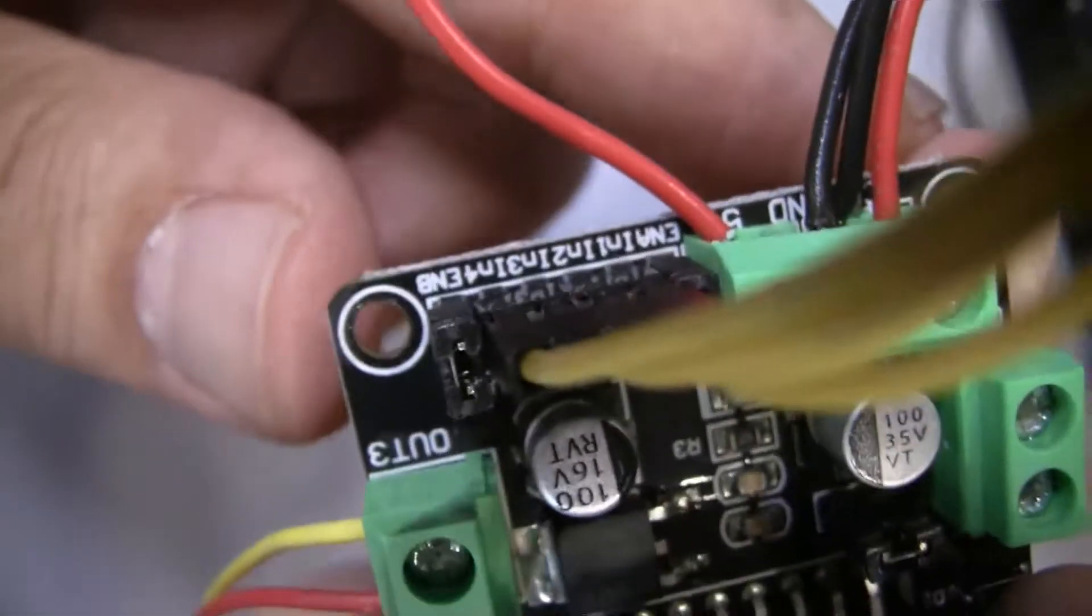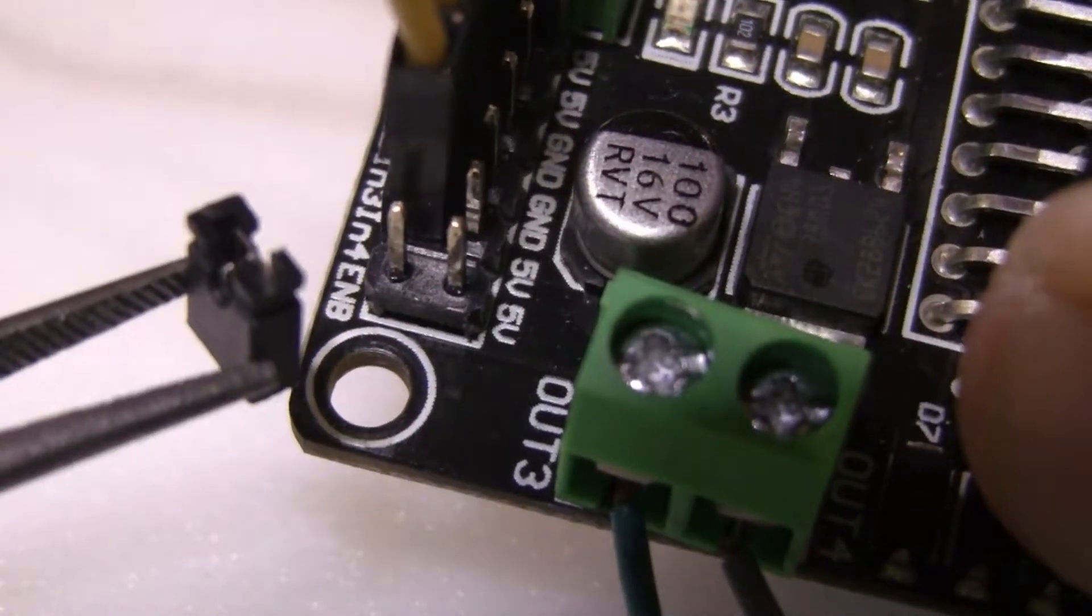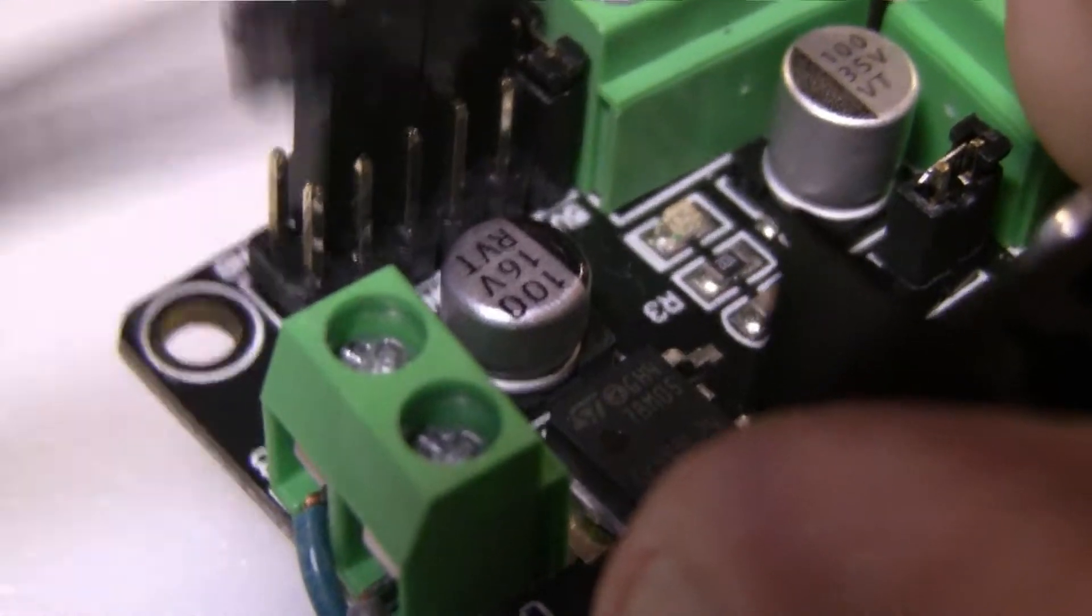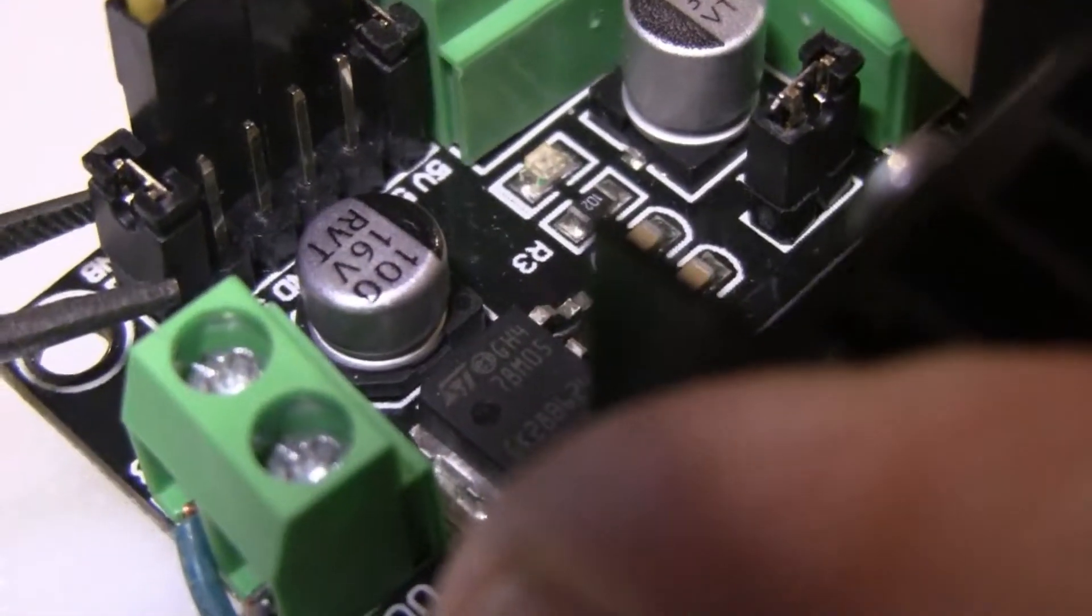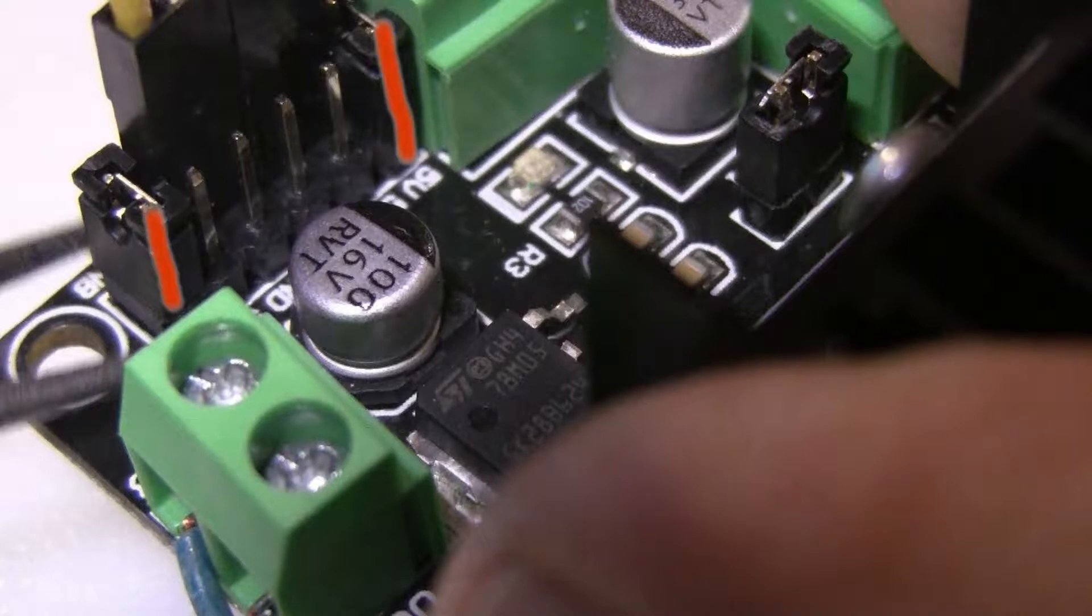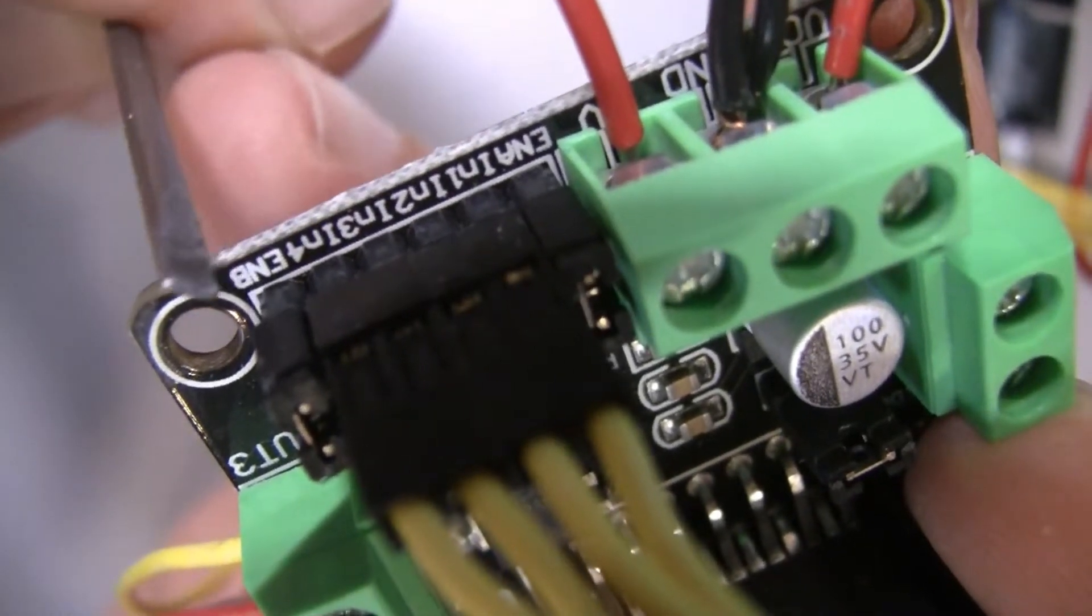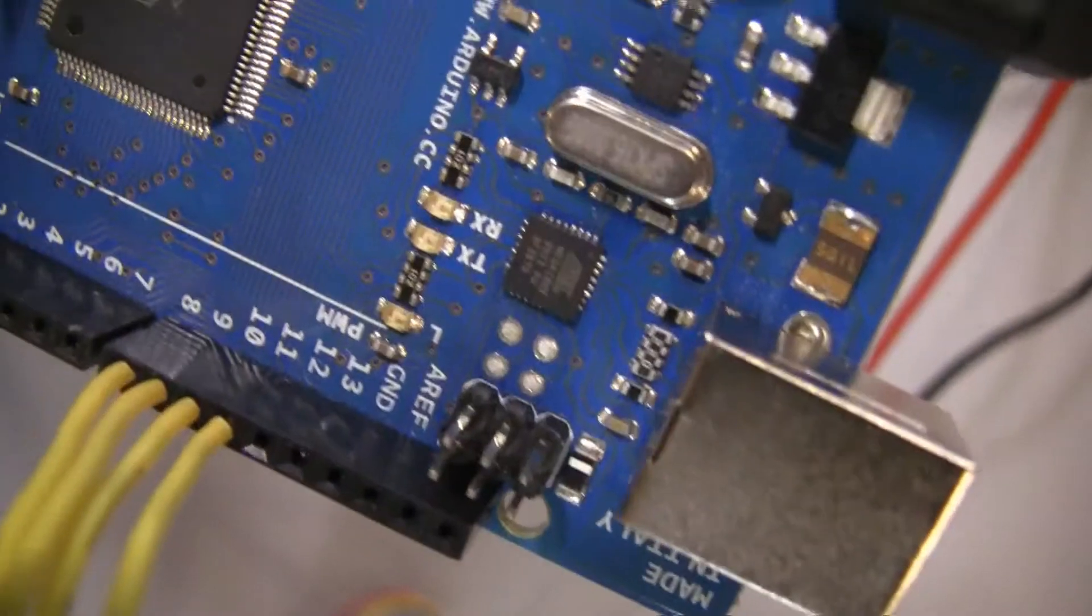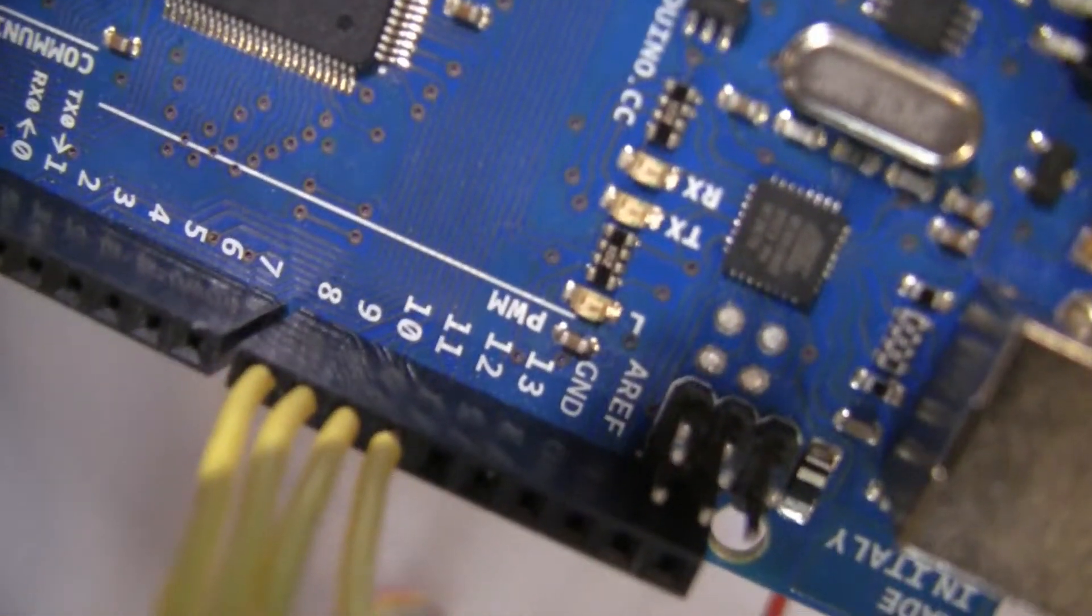Now connect the cables that go from the board to the Arduino. First install two jumpers to the first pin ENA and the last pin ENB. This will power the motor with the 5 volts per channel. Then from the IN1, IN2, IN3, and IN4 on the board to the Arduino pins number 8, 9, 10, and 11.